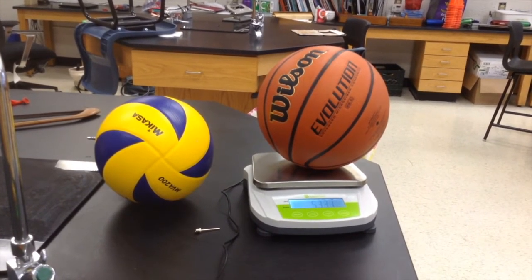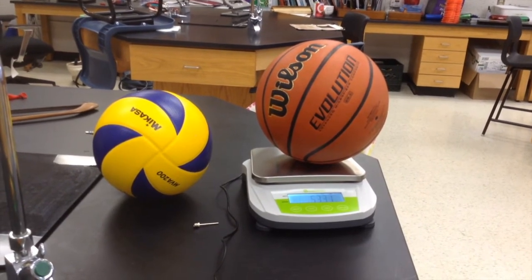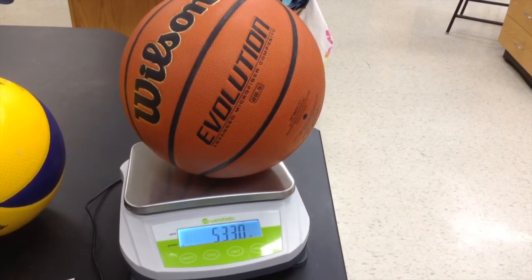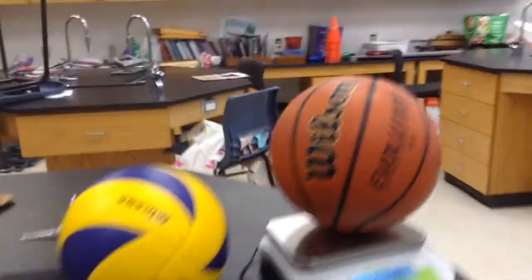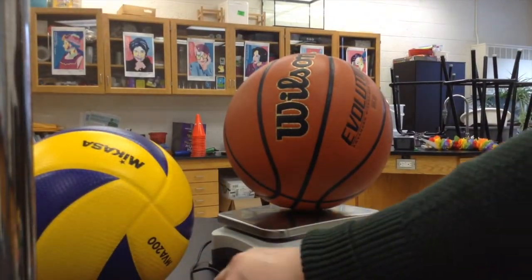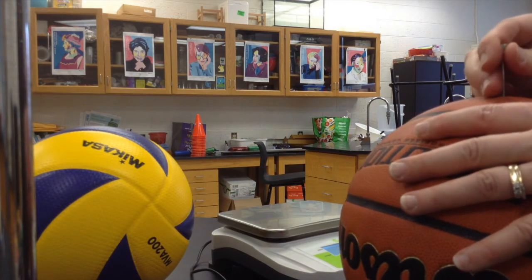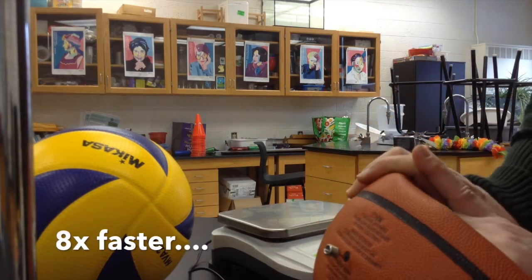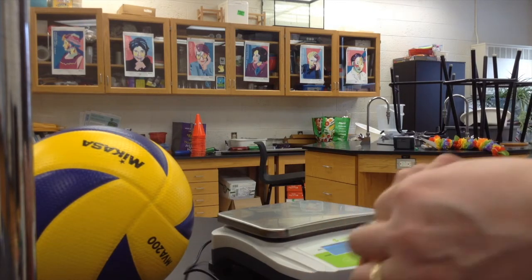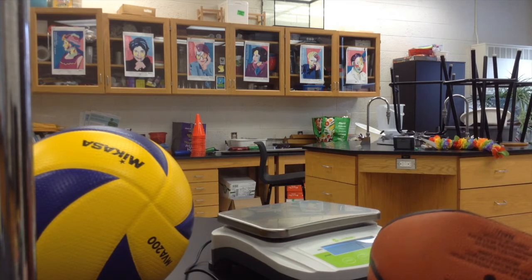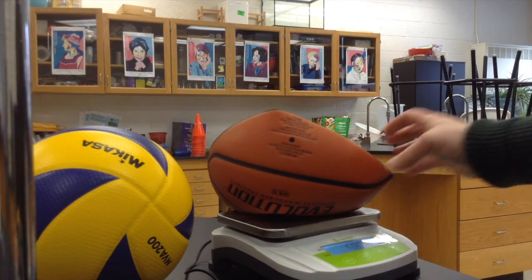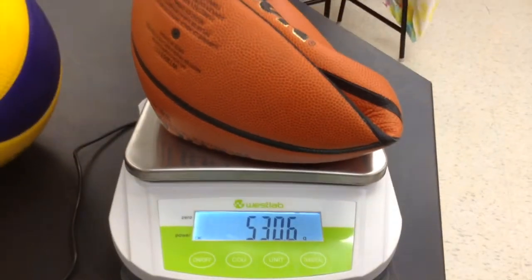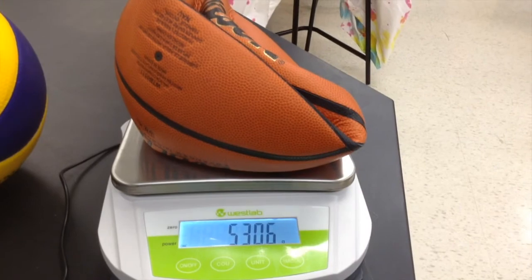And we're going to weigh our inflated balls before and after and see what difference that makes. Our basketball here is starting at about 533 grams, so let's see what happens after. We'll take out the needle, we'll put it back on the digital scale. And we can see we've lost about 2.5 grams of air there, so it's down to 530.6 grams.